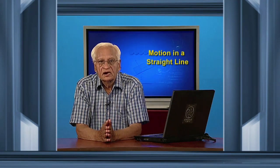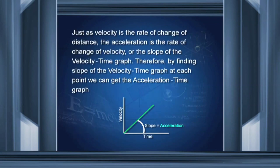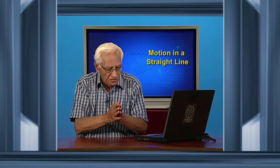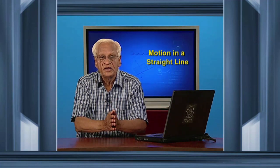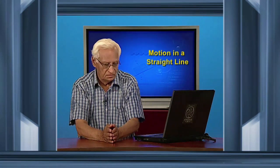We are now ready to consider motion in one dimension. By reading the various slopes at various times on the distance-time graph, we can say whether speed is increasing or decreasing. A uniform blue line indicates constant speed, while steeper curves indicate increasing speed. For a velocity-time graph, the slope gives acceleration, because velocity divided by time is acceleration. Therefore, if the velocity-time graph is linear, the acceleration is uniform — which is the most common case dealt with in introductory physics.